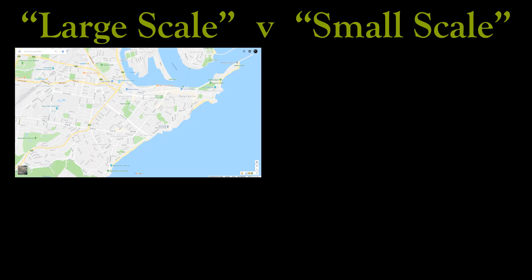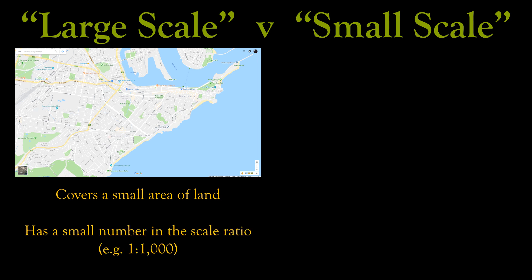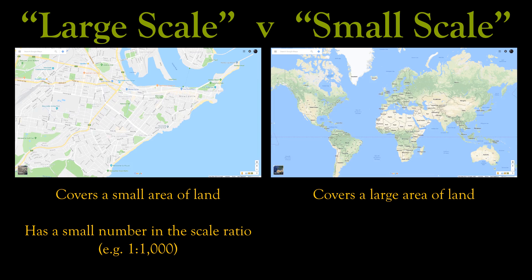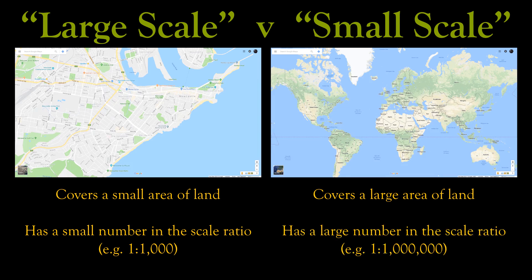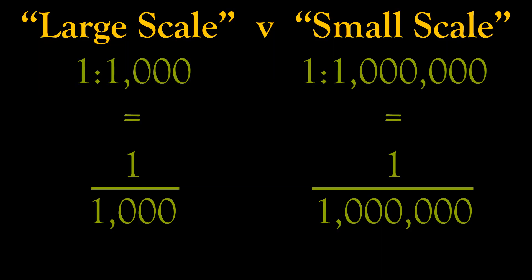There are a couple of extra issues with scales I should mention before we move on. In traditional cartography, the terminology of large-scale and small-scale are, to use a technical term, completely ass-backwards. A large-scale map covers a small area with a small number in the scale ratio, while a small-scale map covers a large area and has a large number in the scale ratio. Cartographic purists will tell you this is because scale ratios are technically a type of fraction, and the fraction of a large-scale map is smaller than the fraction of a small-scale map. But this terminology is so messed up that unless you're talking to an audience full of cartographers, I'd recommend avoiding using these words altogether.